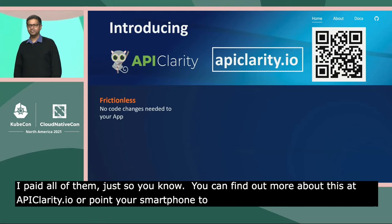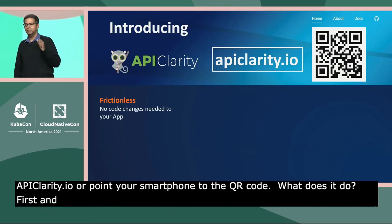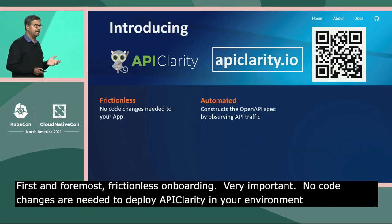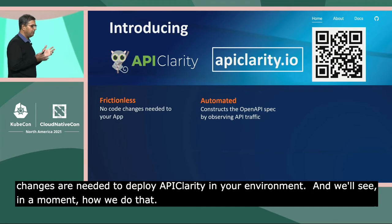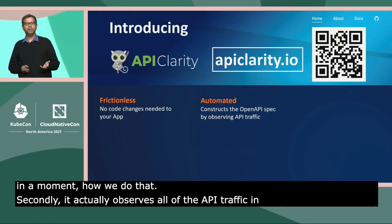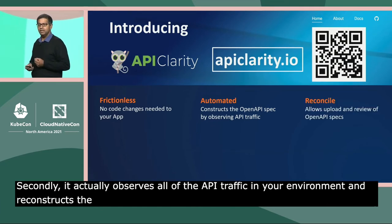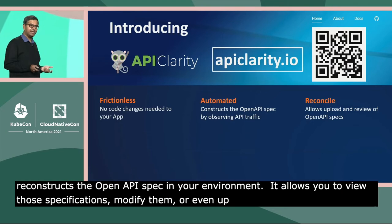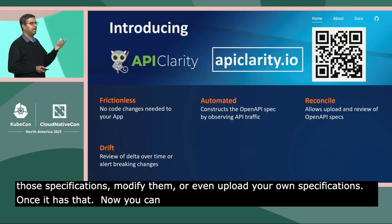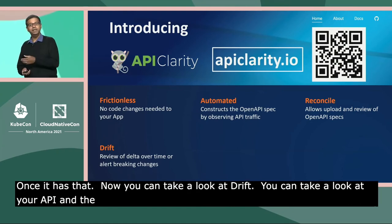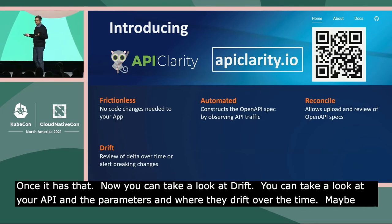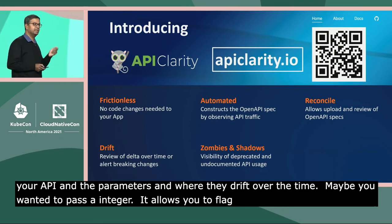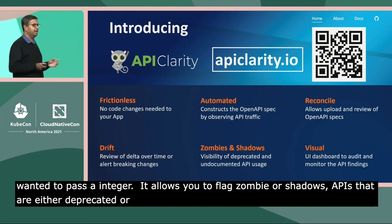What does it do? First and foremost, frictionless onboarding — no code changes are needed to deploy API Clarity in your environment. It actually observes all of the API traffic in your environment and reconstructs the OpenAPI spec for the applications in your environment. It allows you to view those specifications, modify them, or even upload your own. Once it has that, you can take a look at drift — whether APIs and their parameters drift over time. Maybe you wanted to pass an integer as a parameter, but you're passing a double instead. It also allows you to flag zombies and shadows: APIs that are either deprecated or shouldn't have been used in the first place. And all of this through a fabulous UI.